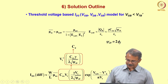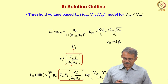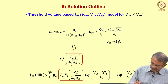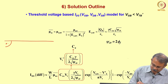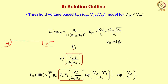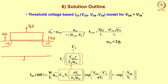Let me show the structure and biasing arrangement so that we get the meanings of all the terms here. We have source, drain, and this is the gate. You are applying a drain to bulk voltage, source to bulk voltage, gate to bulk voltage, and this is the bulk which is grounded.